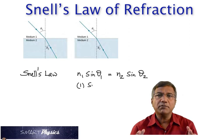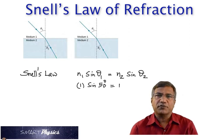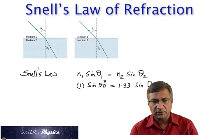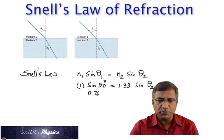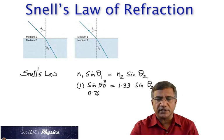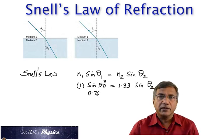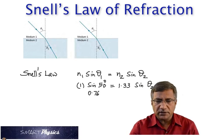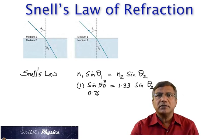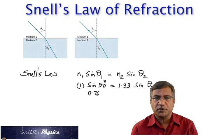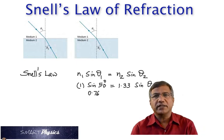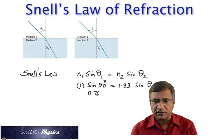So, if you talk about air, the refractive index of air is 1. And assuming that this angle is 50 degrees, theta1 is 50. And if this is water, the refractive index is 1.33. We can calculate the angle theta2.